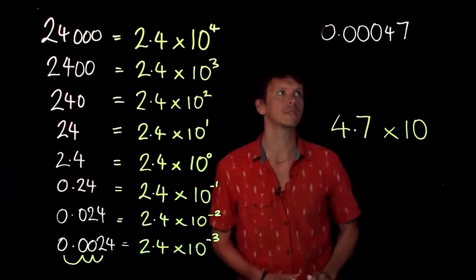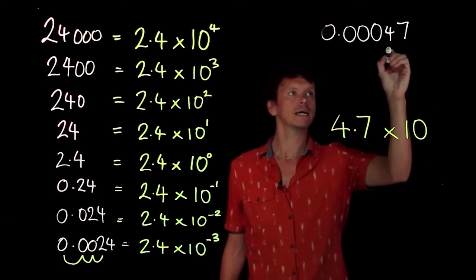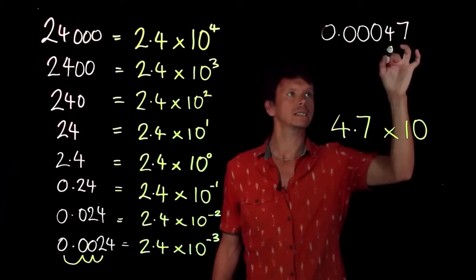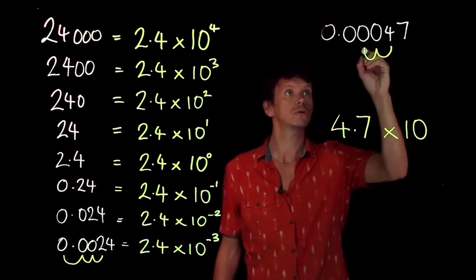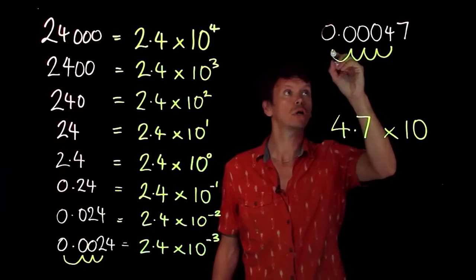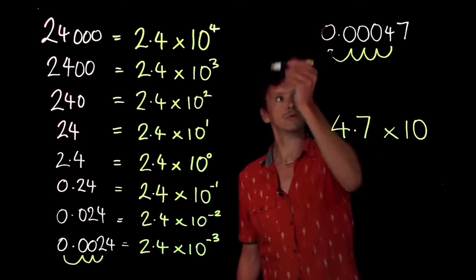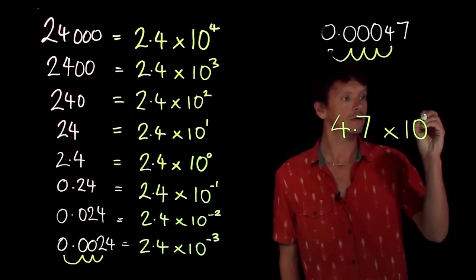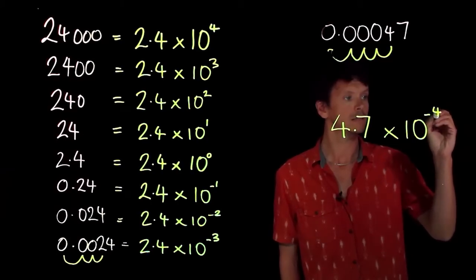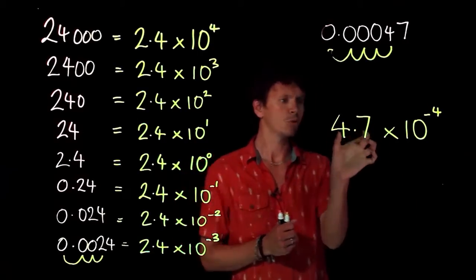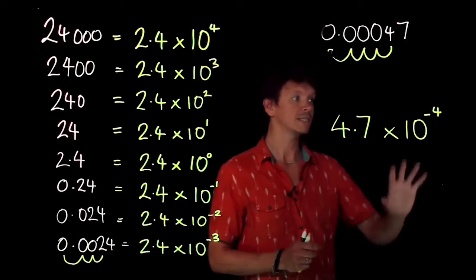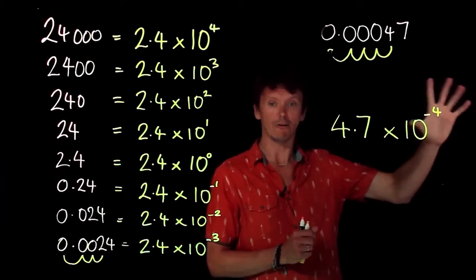Well, we need to think how many places have we had to move this: 1, 2, 3, 4. We've moved the numbers this way, so it's times 10 to the minus 4. Another way to think about that is if we multiplied 4.7 by 10 by a positive power of 10, it's going to get bigger.